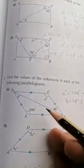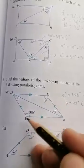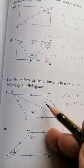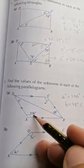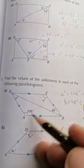According to the angle property of a parallelogram, opposite angles are equal. So this angle a is going to be equal to 106 degrees, because opposite angles in a parallelogram are equal.